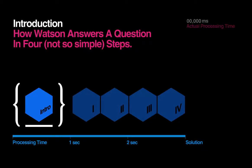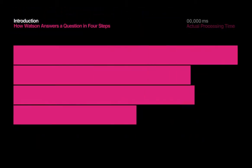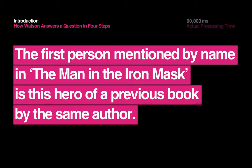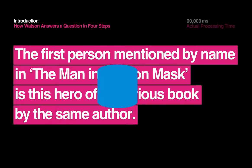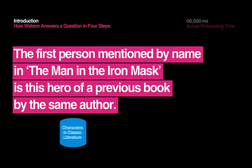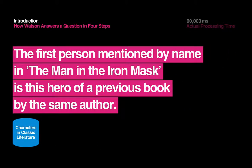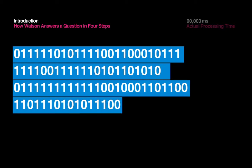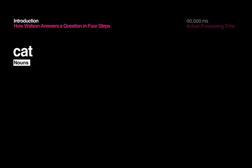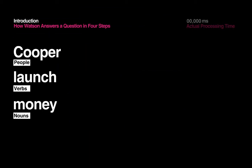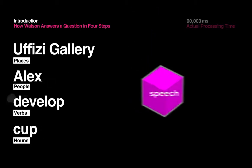How Watson Answers a Question in Four Not-So-Simple Steps. The first person mentioned by name in The Man in the Iron Mask is this hero of a previous book by the same author. This is a typical Jeopardy! clue, presented in the tricky Jeopardy! format that can be pretty difficult for a person to understand, much less a computer. Remember, a computer understands code, ones and zeros, not nouns and verbs or people and places, let alone the relationships between them.